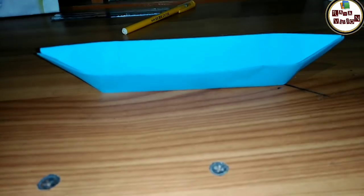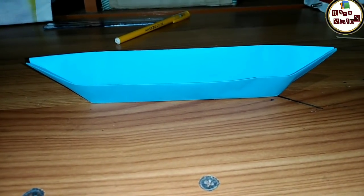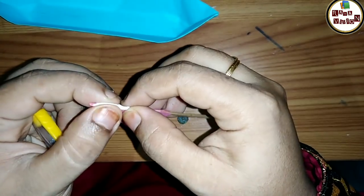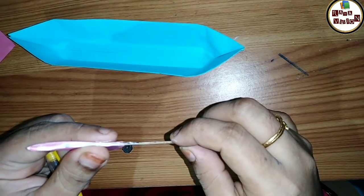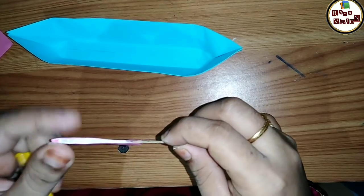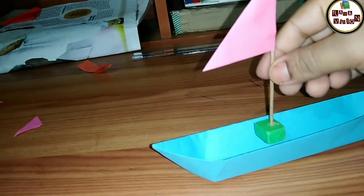Now you want to put the flag. To make the flag, apply glue on the triangular strips and fix it over the stick. After that, fix the stick on an eraser so that it will not fall down from the boat.